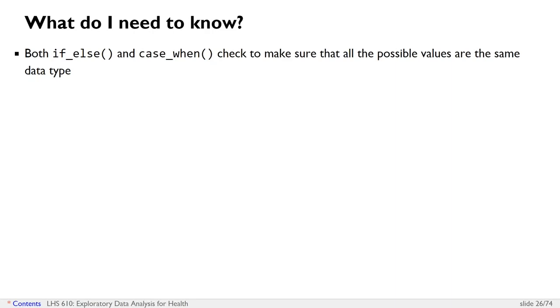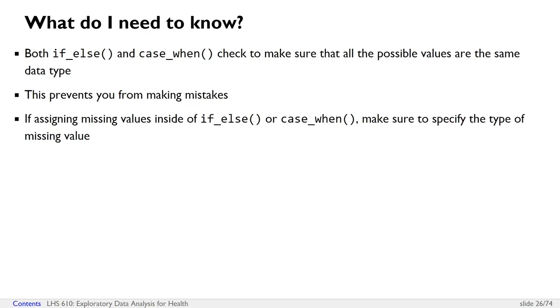To summarize what you need to know: if_else and case_when both check that all possible values being returned are the same data type — this prevents mistakes. Most of the time, converting between integer and numeric isn't a big mistake, but if_else and case_when are strict and will produce an error even for integer-to-numeric conversions. So if you get an error, the first thing to check is whether the values being returned are all the same data type. And if you want to assign missing values inside ifelse or case_when, make sure the type of missing value matches the type of your data.